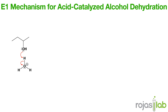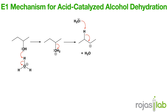Now let's talk about E1 acid-catalyzed dehydration of alcohols — the conversion of alcohols to alkenes under acidic, heated conditions. In the first step, protonation of the OH group forms a better leaving group. From here, water leaves, forming a carbocation. Next, deprotonation allows us to form our alkene. Key points are that secondary and tertiary alcohols typically proceed via the E1 mechanism, and a strong acid like sulfuric acid or phosphoric acid plus heat are required.